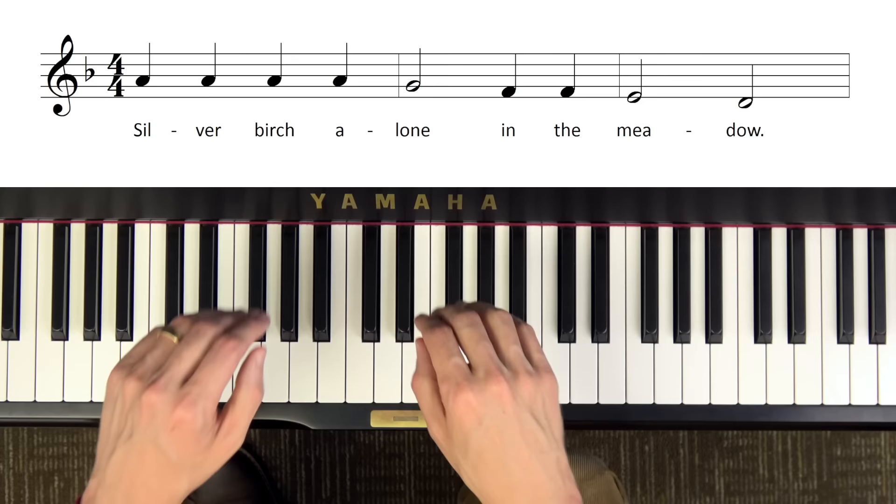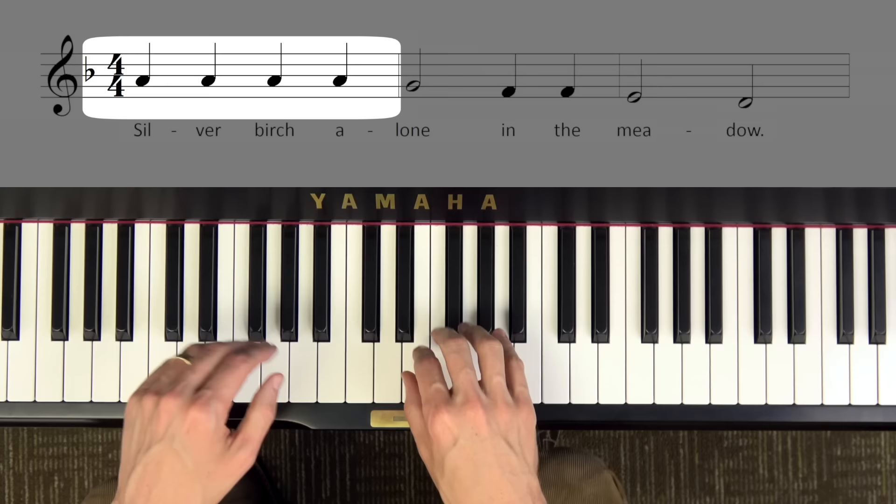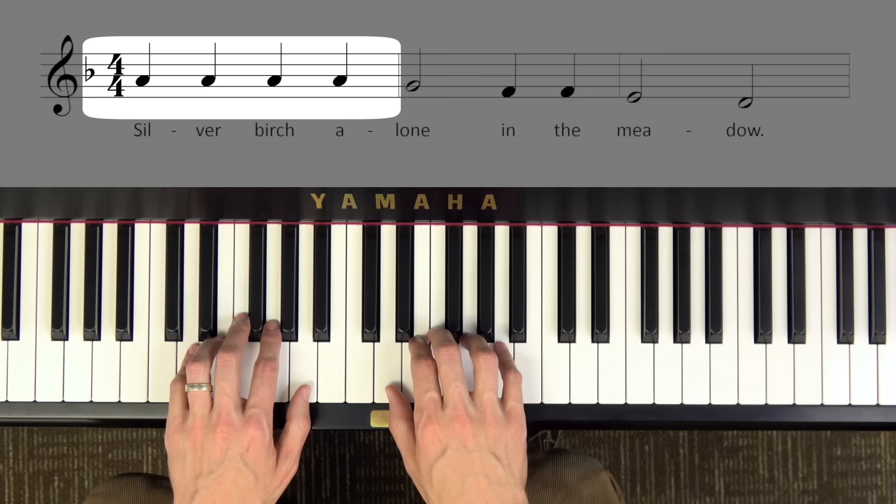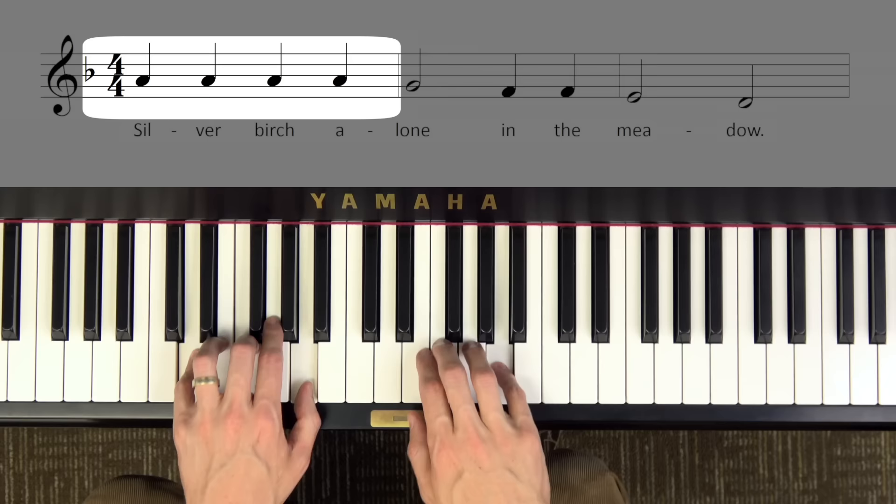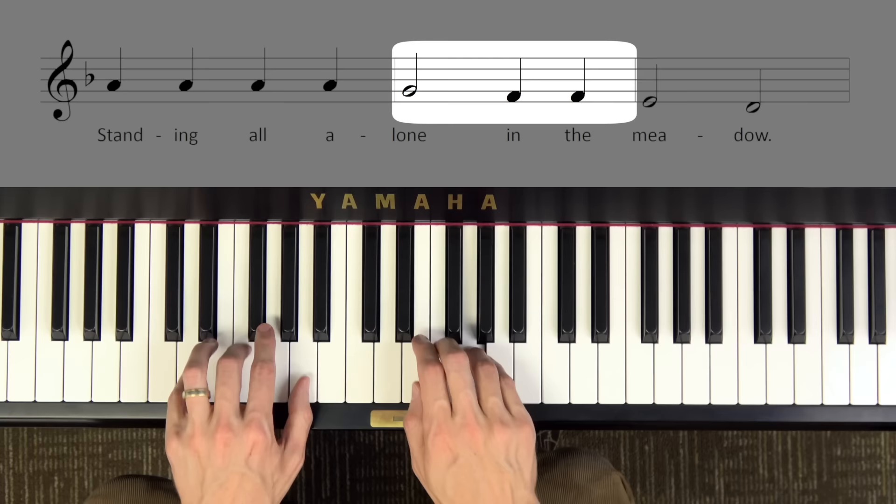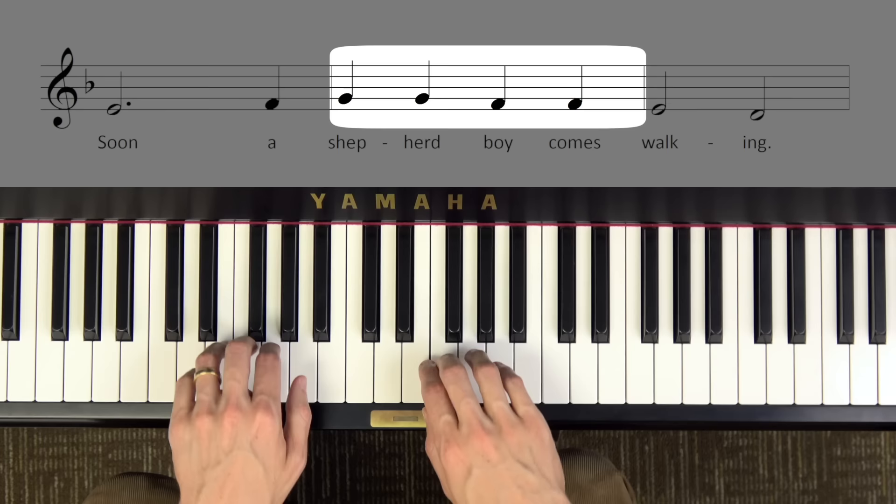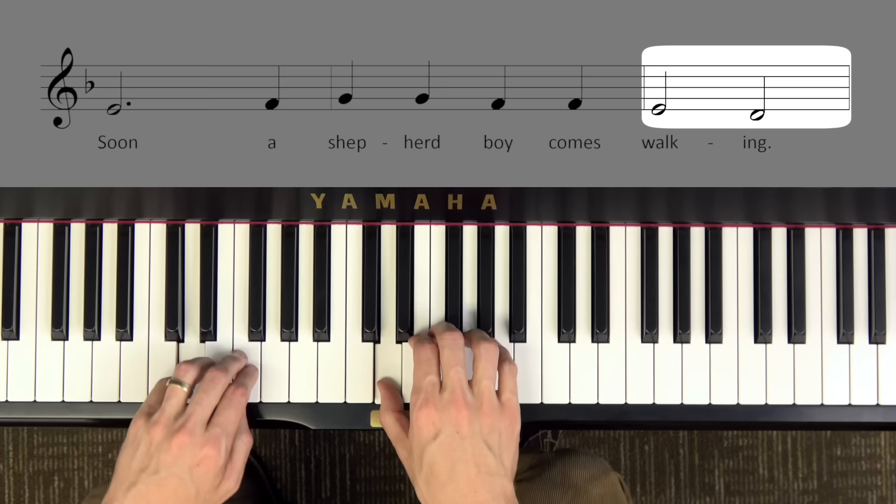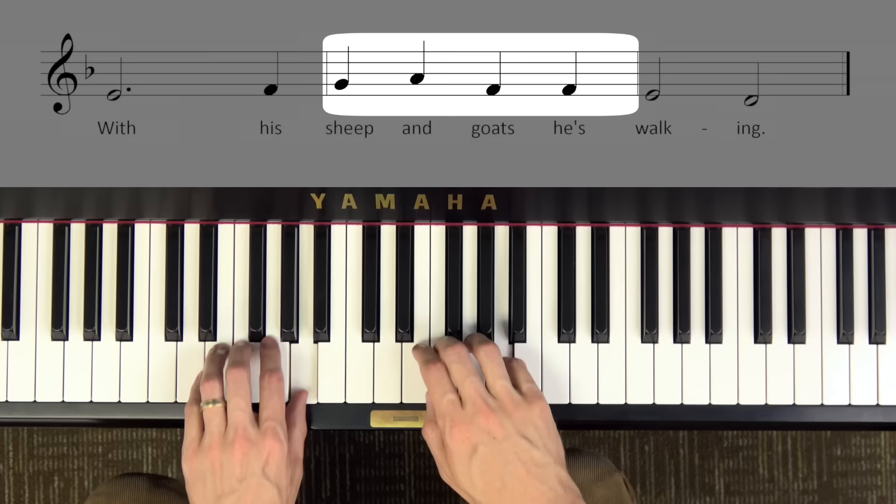Okay, I'm going to play all of Silver Birch Tree. I'll be adding the chords which we'll learn in a later lesson, but your job is to just play the right hand, or if you like just listen. Here it is from the beginning. I'll count 4 beats, and then we'll start. 1 2 3 4.